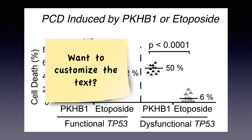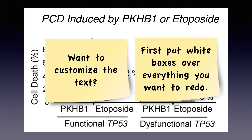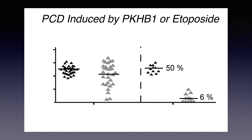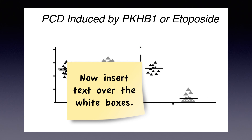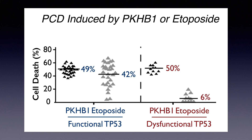Another thing I can do is customize the text. When I copied the text from the article, it may be a little blurry or the resolution wasn't great, and sometimes the font size is really small on the axes — not good for a presentation. So I might want to customize that text. I also might want to add some color to liven things up and help people understand the different parts of the figure. Again, I'll use the white box trick — put white boxes over everything I want to redo — and then add my own text right over those white boxes. In this case, I've chosen blue and red colors to differentiate between the functional and dysfunctional TP53. And don't forget to provide a citation for the figure in whatever way is most appropriate for your venue.